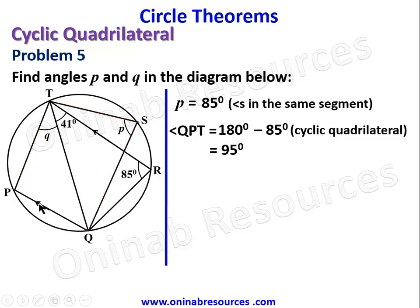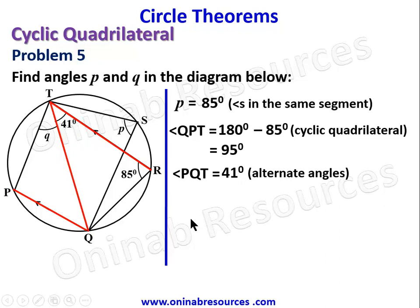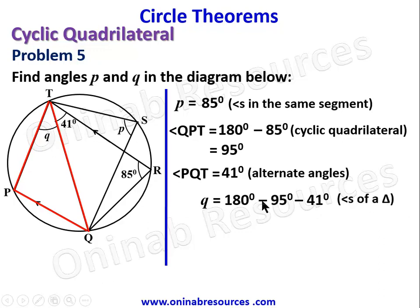Next, the parallel lines act with the transversal to give angle PQT equal to 41 degrees — alternate angles are equal. Then, in triangle PQT, Q equals 180 minus 95 minus 41 degrees — angle sum of a triangle — giving Q equals 44 degrees. That completes Problem 5.